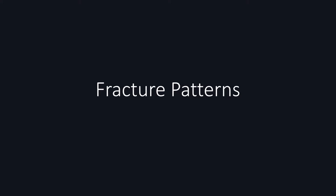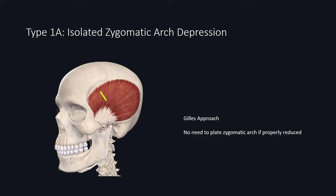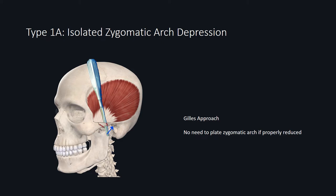Next, we'll discuss commonly seen fracture patterns with ZMC. In Type 1a, you have an isolated zygomatic arch depression pushing up against the coronoid, causing trismus. In that case, use the Gillies approach to reduce the fracture. As mentioned before, it is very rare for this area to require plating.